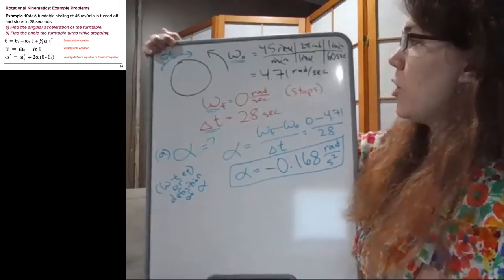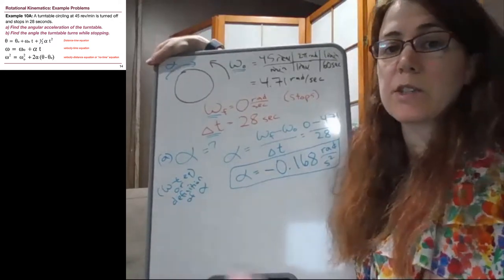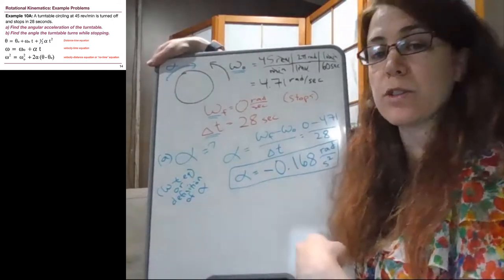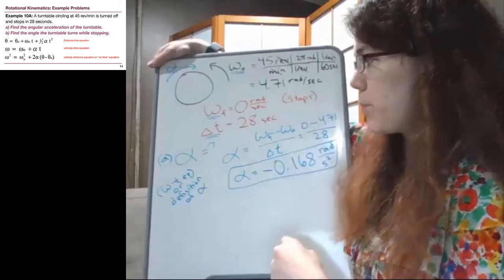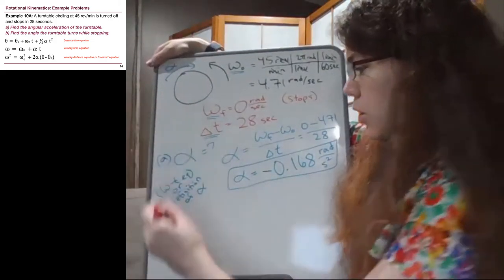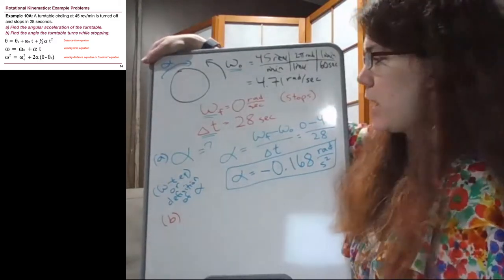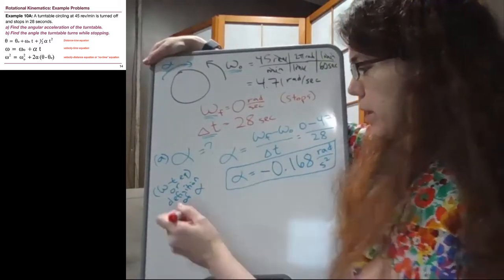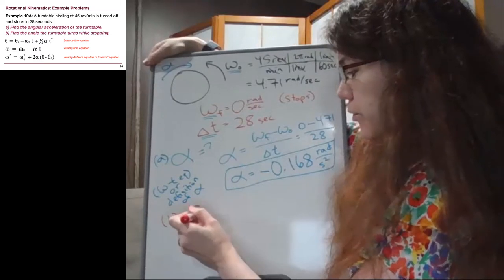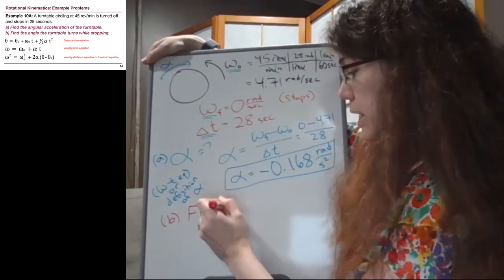Okay, so the second part of the question is asking us to find the angle the turntable turns while stopping. So in part b, we can rephrase the question the way that we learned to back in chapters two and three.